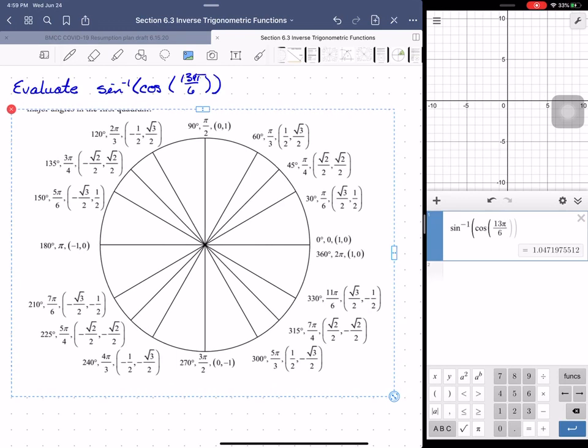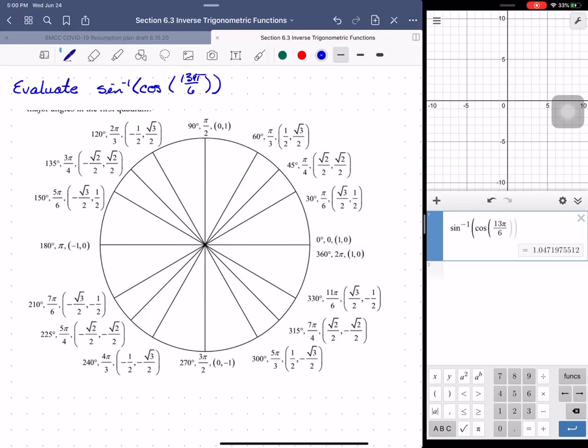So our unit circle. So we remember that 13 pi over 6 is a known value. But why isn't it showing up on my unit circle? Well, because 13 pi over 6 is coterminal with pi over 6. So 13 pi over 6 is bigger than 2 pi, so we'll subtract that off, and we get pi over 6, which means that this is our point right here.